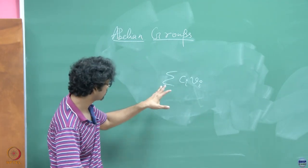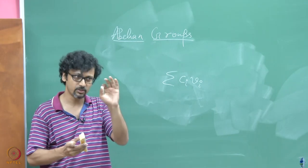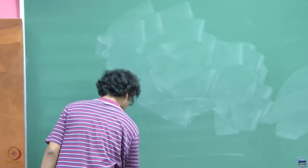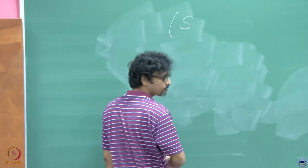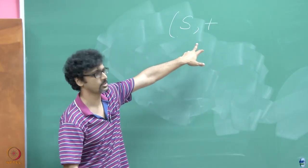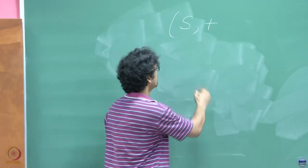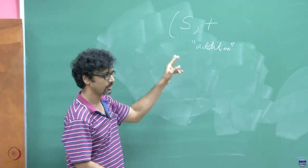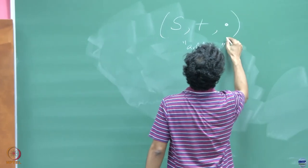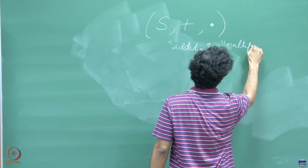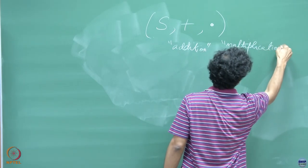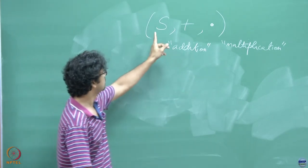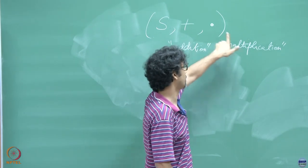If we want a fuller understanding in an abstract sense, we need to talk not just about a set with one binary operation but with two binary operations. So in addition to what we defined with groups — a set with addition, where plus stands for any binary operation — let us also talk about a second operation which we will call multiplication. Again, within quotes, because this is not necessarily the usual multiplication.